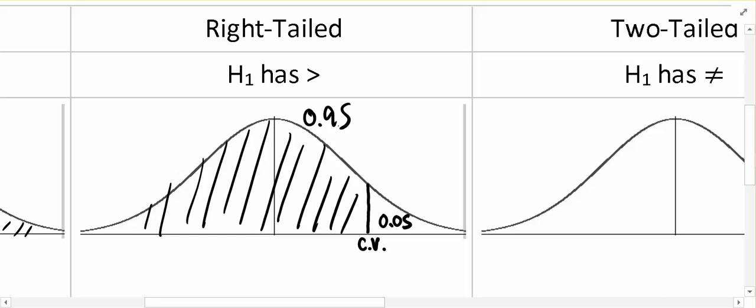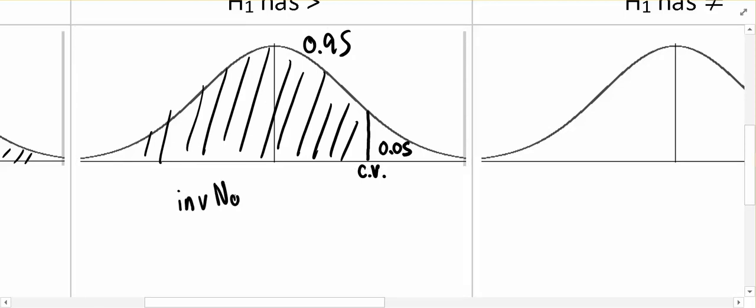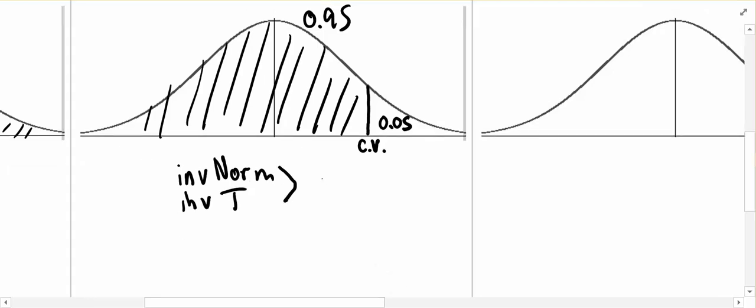Now remember, the format for typing inverse t or inverse norm is to input the area to the left. So if we were trying to find this critical value, we'd be using inverse norm or inverse t, depending on which distribution. And in this case, we'd be inputting 0.95 as your area to the left. Because again, we had 0.05 to the right, we had our significance to the right for this right-tailed test, so the area to the left would have been the 0.95.